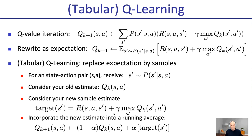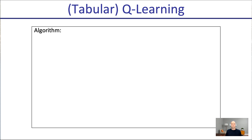We incorporate this new estimate into a running average. Q_{k+1} is an inexact update since we only have one sample, so we keep what we had before with some weighting and mix it with the new target. Every time we get a new sample from state S, we mix in new targets, getting a running average effect accumulated into our Q. We'll still converge to something close to the actual expectation.